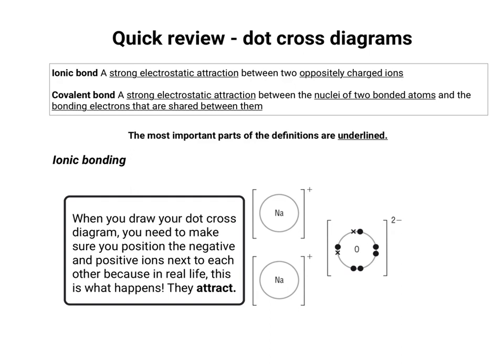The first tip when drawing dot-cross diagrams for ionic compounds is to position the negatively charged ion and the positively charged ions next to each other. This is particularly important when you have two or three positively charged ions and one negatively charged ion, such as a 2- and two 1-pluses. The reason for this is that you actually get attraction between them — the definition says attraction between two oppositely charged ions, so drawing them next to each other signifies that attraction.